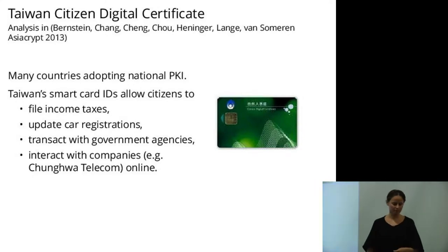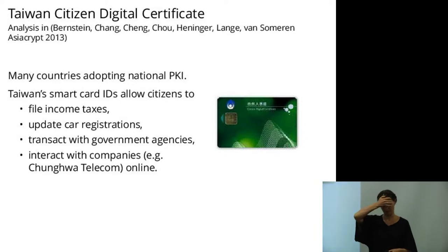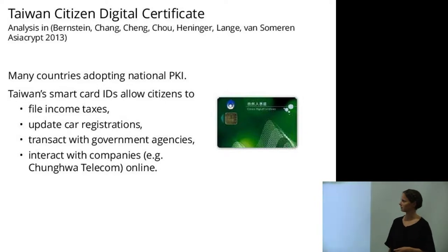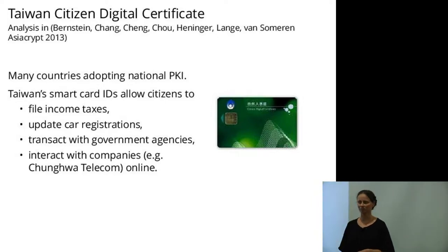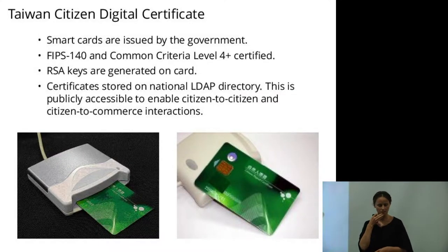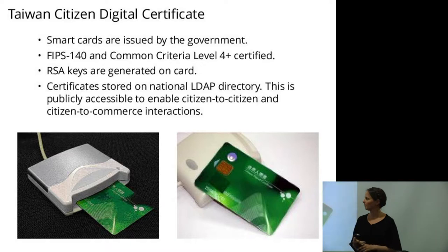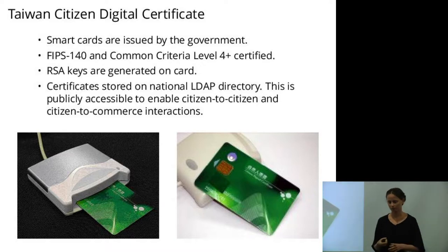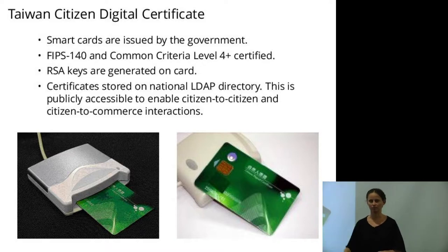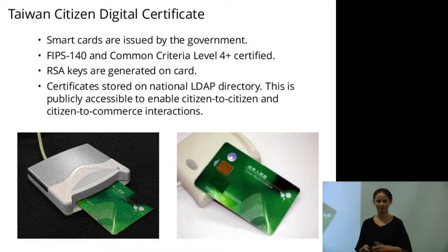In this project, we started looking at the public key infrastructure that Taiwan has. They have smart cards — everybody in Taiwan can get a smart card and it allows them to securely log into all sorts of government services. You can file your income taxes and so on with this PKI smart card. These cards are issued by the government, have all proper certifications for smart card security, and use RSA for their PKI.